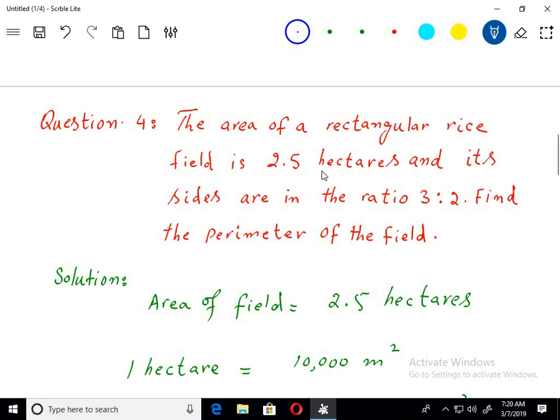The area of a rectangular rice field is 2.5 hectares and its sides are in the ratio 3:2. Find the perimeter of the field.